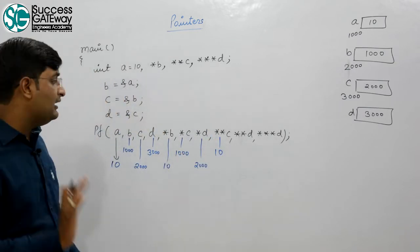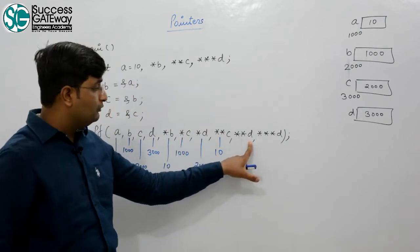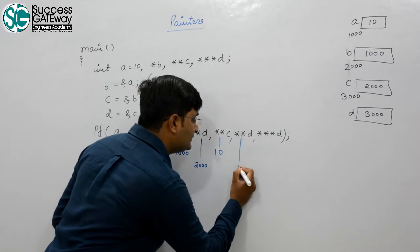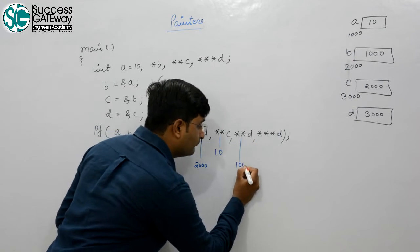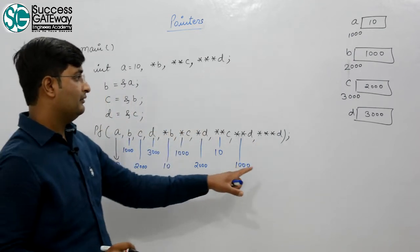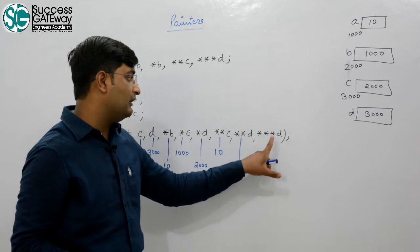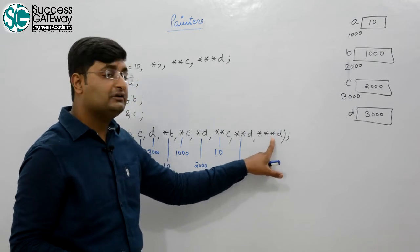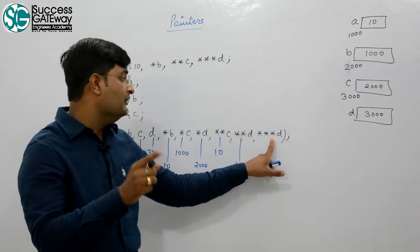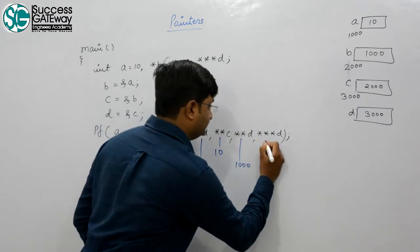Similarly, ***d means: value at 3000 is 2000, value at 2000 is 1000, and value at 1000 is 10. So ***d equals 10.